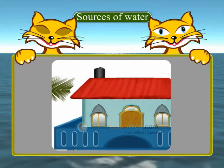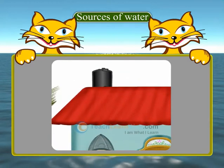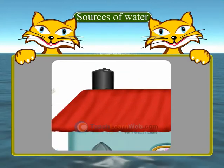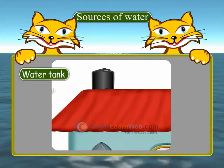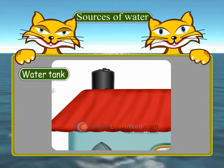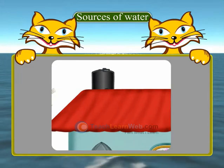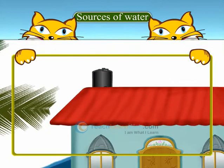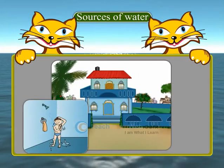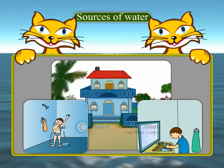Have you seen a black tank on your building? That is a water tank. Water is stored in a water tank and distributed into different rooms in a house through pipes.